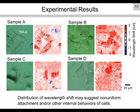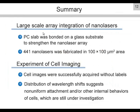In summary, we fabricated a large-scale integrated nanolaser array. The PC slab was bonded on a glass substrate to strengthen the nanolaser array. We demonstrated 441 nanolasers in a 100 square micron area, and applied it to cell imaging. The cell images were successfully acquired without labels. The distribution of wavelength shifts reflects non-uniform attachment and/or the internal behaviors of the cells, which are still under investigation.